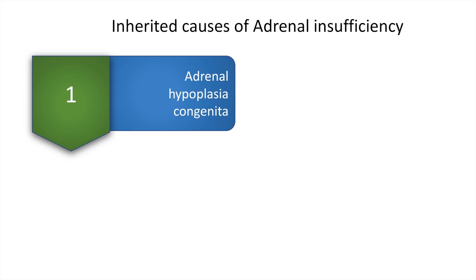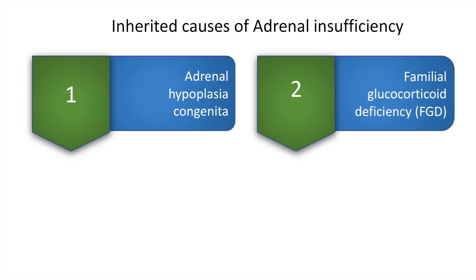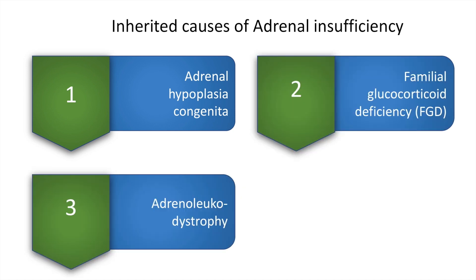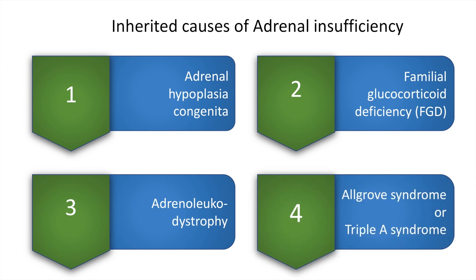There are a few rare inherited causes of adrenal insufficiency, including adrenal hypoplasia congenita, familial glucocorticoid deficiency, adrenal leukodystrophy, and Algrove or AAA syndrome.